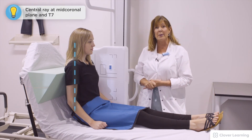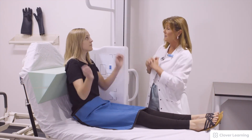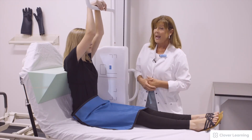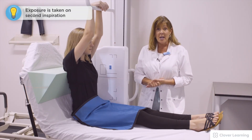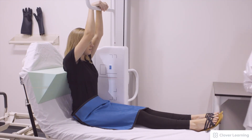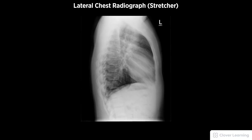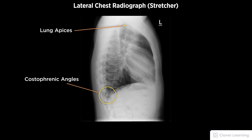I have pulled out the hand bar so the patient can put her arms up and they are not in the field of view. We are using the mid-coronal plane and T7 as our central ray. We're going to do this on second inspiration — take in a big deep breath, blow it all the way out, take in another big deep breath, hold your breath, and the exposure is made. A diagnostic lateral chest radiograph on a stretcher should be free of motion and rotation, include both lung apices and both costophrenic angles, with the hilum centered and the sternum in profile.